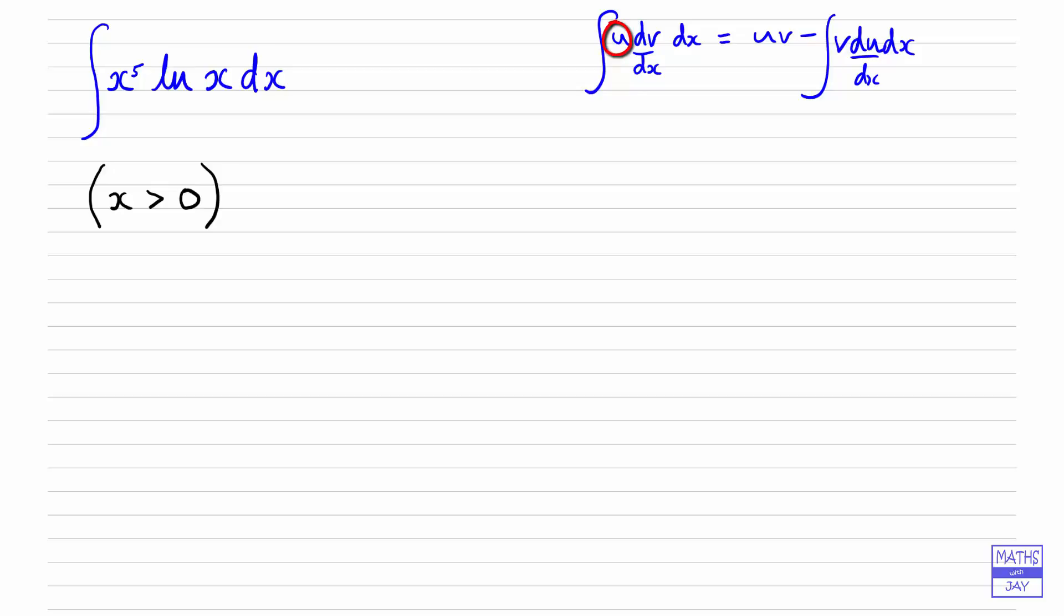However, this is a very special example where we're going to want to let u equal the natural log of x. And the reason for that is that when we differentiate it, we get effectively a power of x, 1 over x, which of course is x to the power of negative 1.